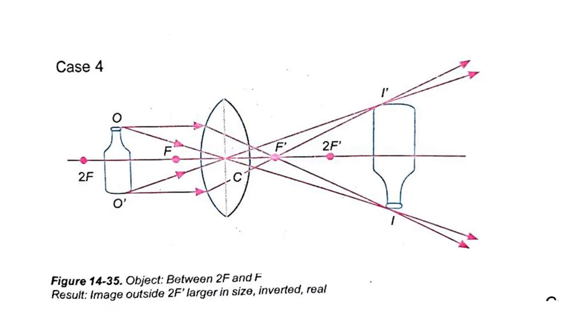In case number four, an object is placed between 2F and F position. Now, we can see that the image formed is outside the 2F prime position, larger in size, inverted, and considered to be real.